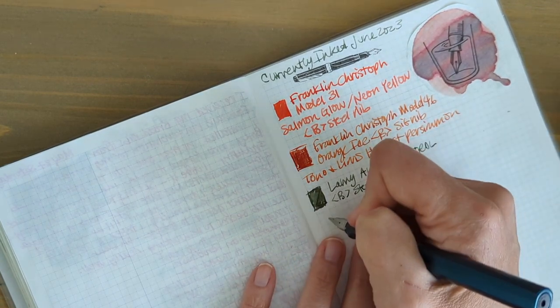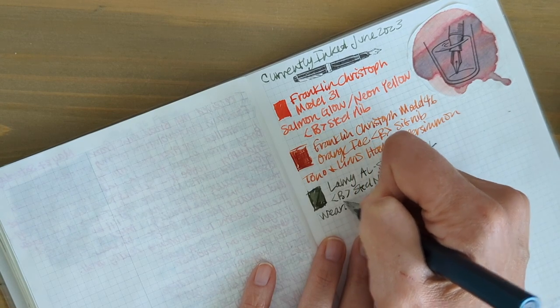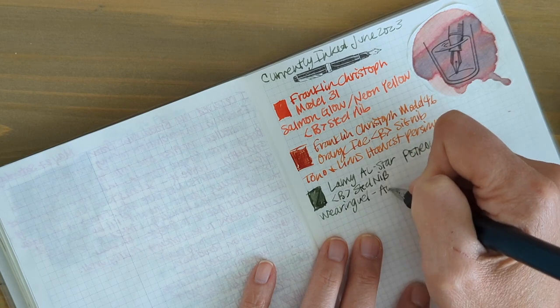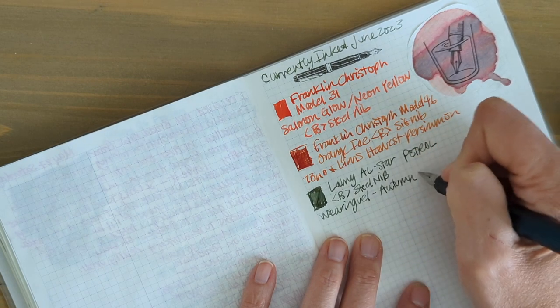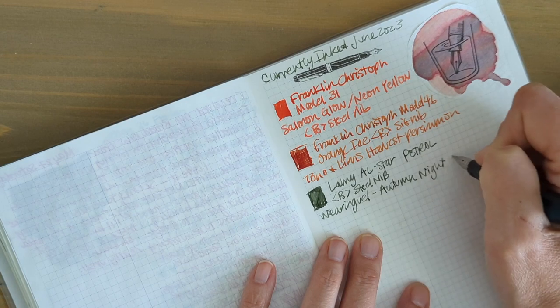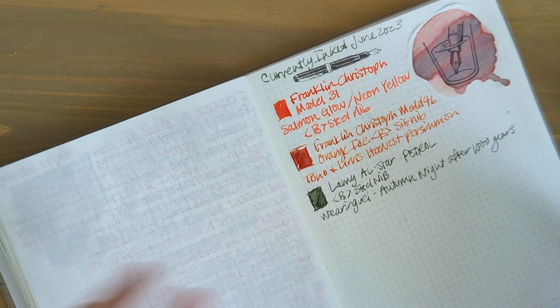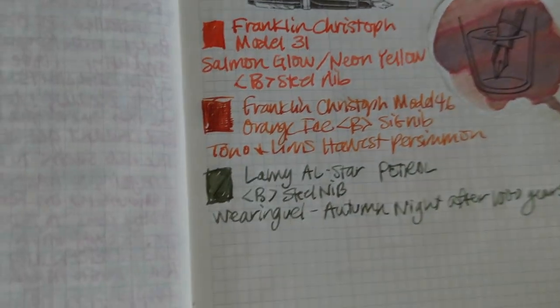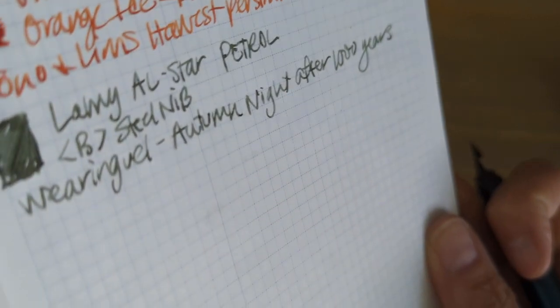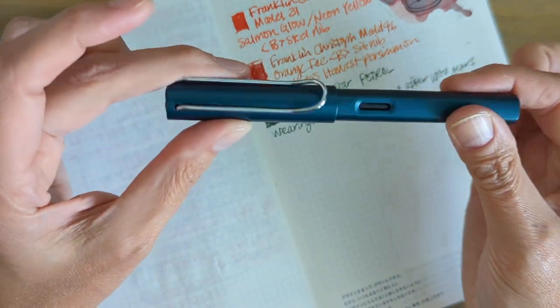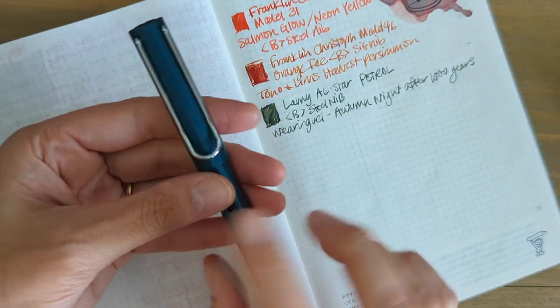I have this inked up with Wearingeul and it's called Autumn Night After One Thousand Years. It's kind of a gray kind of a green. Really happy with this pen.